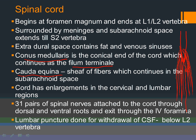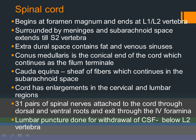Below the conus medullaris, nerve fibers still need to exit through intervertebral foramina. Sacral nerves pass through sacral foramina and lumbar nerves through lumbar foramina, so there is a sheaf of nerve fibers in the subarachnoid space resembling a horse's tail — this is called the cauda equina. The spinal cord is enlarged in the cervical and lumbar regions because nerves there supply the upper and lower limbs, requiring more neurons. There are 31 pairs of spinal nerves attached to the spinal cord by dorsal and ventral roots, exiting through intervertebral foramina.